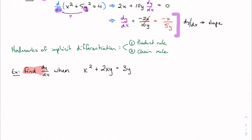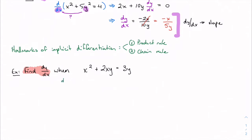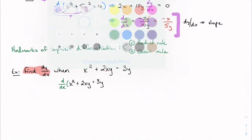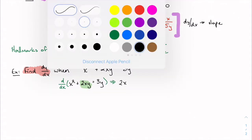We find dy/dx and take this one piece at a time. For the first term, the power rule gives 2x straightforwardly. For the second term, we have a product: 2x times y. Before doing anything else with it, we need to apply the product rule.